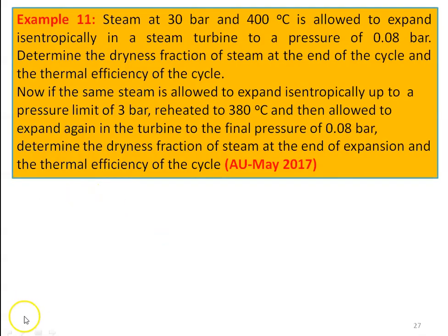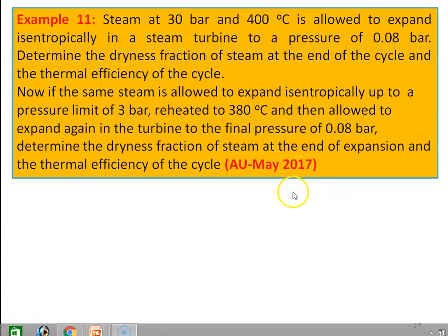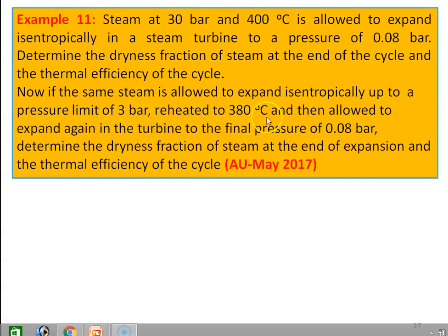Example number 11, from the May 2017 question paper: Steam at 30 bar and 400°C is allowed to expand isentropically in a steam turbine to a pressure of 0.08 bar. Determine the dryness fraction at the end of the cycle and thermal efficiency. In the second part, the same steam expands isentropically to 3 bar, is reheated to 380°C, then expands again to 0.08 bar — determine dryness fraction and thermal efficiency for this reheat cycle.